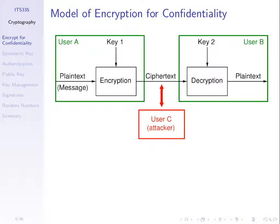Find the key. If the attacker finds the key, they can decrypt easily — they know the ciphertext, apply the algorithm, and get the plaintext. Or if they find the plaintext without finding the key, they've also been successful. So the challenge from the attacker's perspective: find the key and/or plaintext, given the ciphertext and the algorithms.